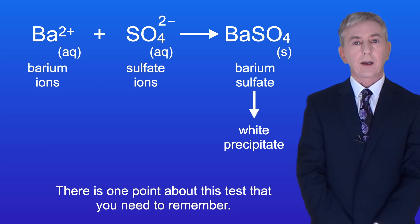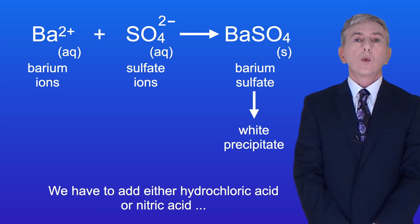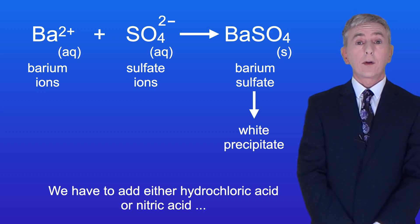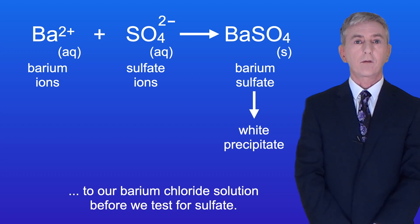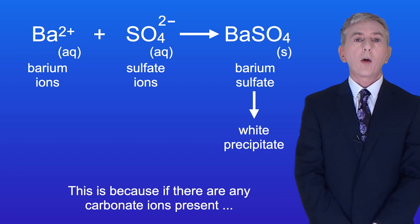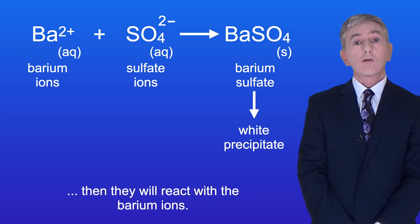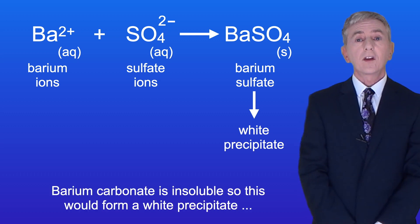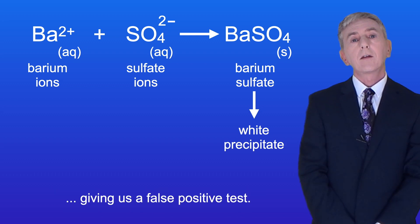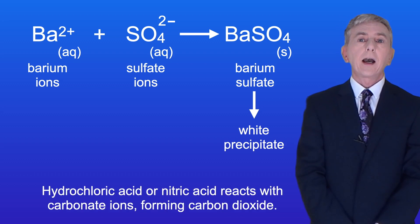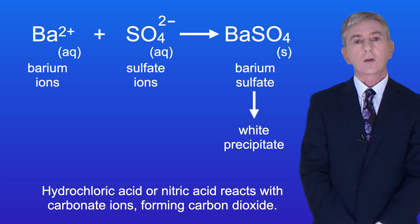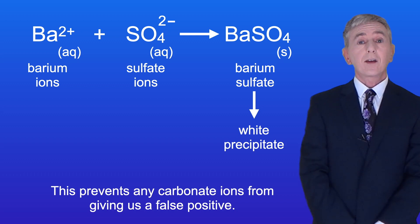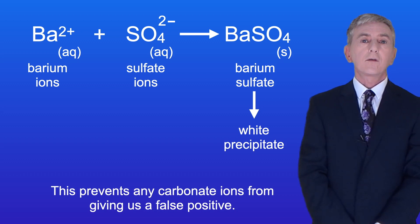There's one point about this test that you need to remember. We have to add either hydrochloric acid or nitric acid to our barium chloride solution before we test for sulfate. This is because if there are any carbonate ions present, they will react with the barium ions. Barium carbonate is insoluble, so this would form a white precipitate, giving us a false positive test. Hydrochloric acid or nitric acid reacts with carbonate ions forming carbon dioxide, and this prevents any carbonate ions from giving us a false positive.